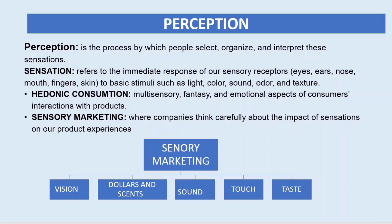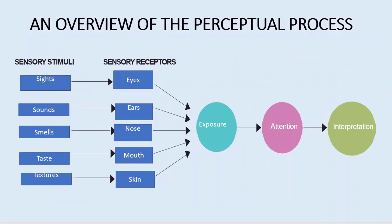Marketers also use the taste of consumers. Some marketers use the strategy of taste by presenting pictures of food that makes you imagine how sweet that product tastes. That is an overview of the perceptual process — this is the summary of the chapter.